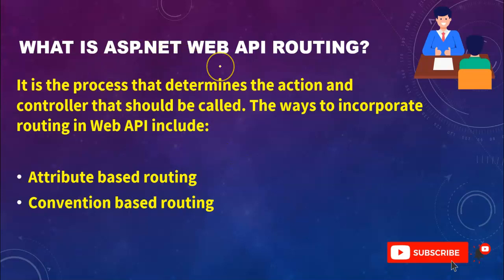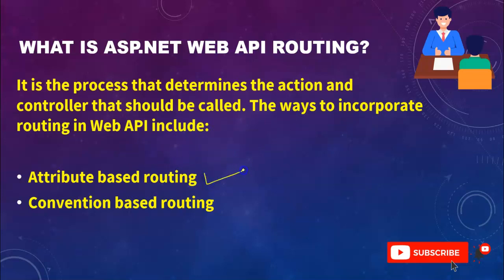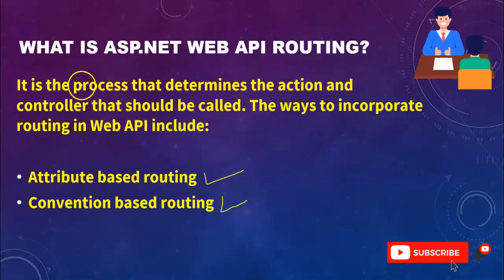What is ASP.NET Web API routing? Routing is the process that determines which action and controller should be called. There are two types of routing: attribute-based routing and convention-based routing. This is a very common interview question — you will definitely get this question in an interview.